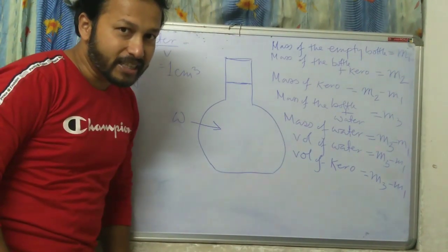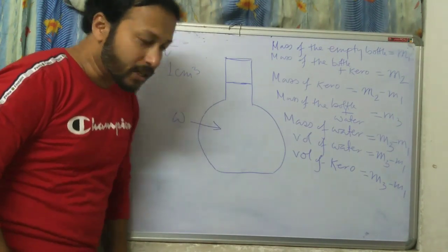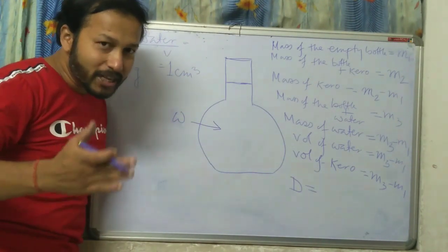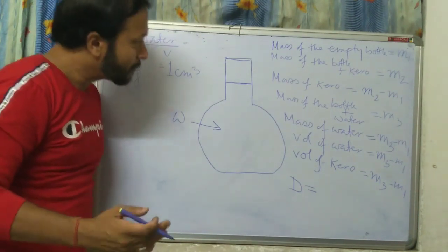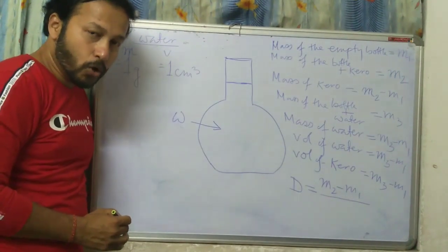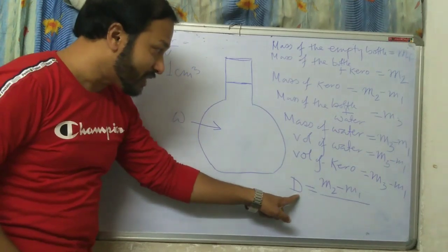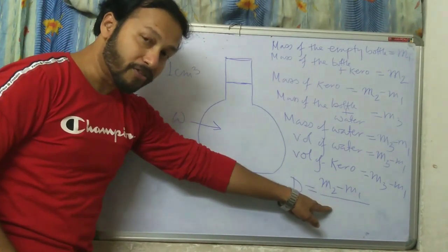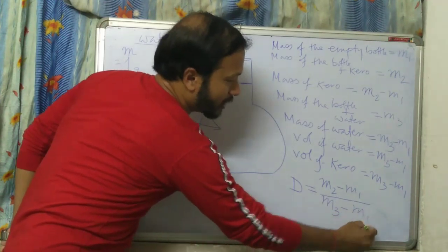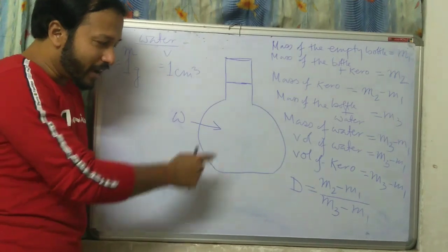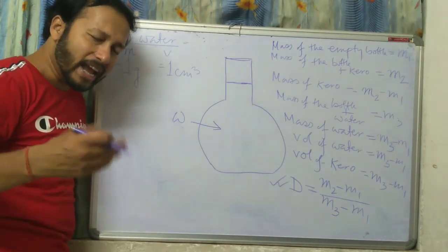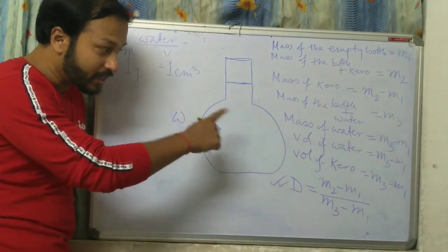Now we find the density of kerosene. Density equals mass by volume. Mass of kerosene is M2 minus M1, and volume of kerosene is M3 minus M1. So density of kerosene equals (M2 minus M1) divided by (M3 minus M1). Using this formula, we can calculate the density of any liquid: mustard oil, kerosene, alcohol, or any other liquid.